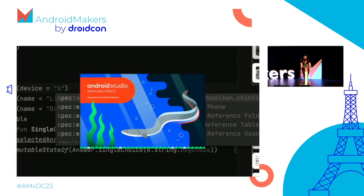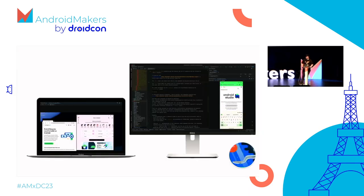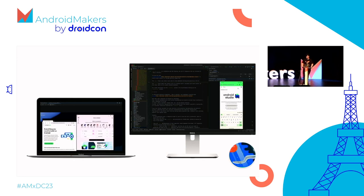Electric Eel is the next iteration — it includes Compose previews that update automatically, visual linting for views, universal problems panel, and improved sync performance, significantly upgrading build analysis and automatic fixes. My favorite thing was the desktop emulator — you can test how your app might behave on a Chromebook or foldable device. If you use Vysor or scrcpy, that's now built into Android Studio, which is awesome.